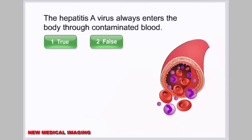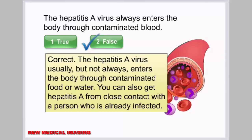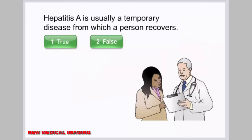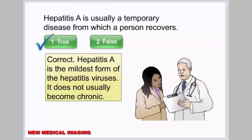Quiz review: The statement that the hepatitis A virus always enters the body through contaminated blood is false. The virus usually, but not always, enters through contaminated food or water, and can also spread through close contact with an infected person. Hepatitis A is usually a temporary disease from which a person recovers — it is the mildest form and does not usually become chronic.